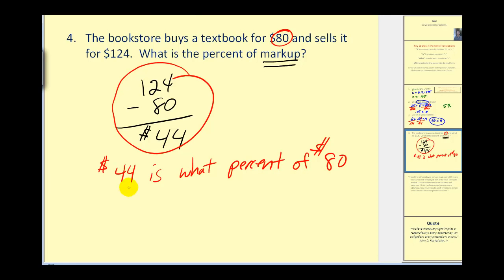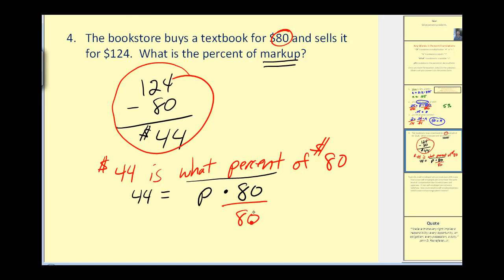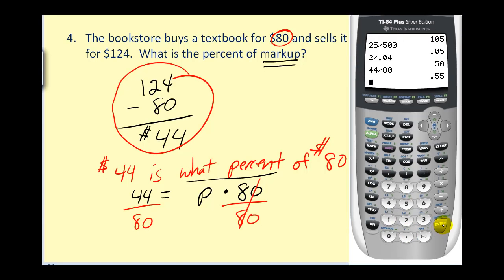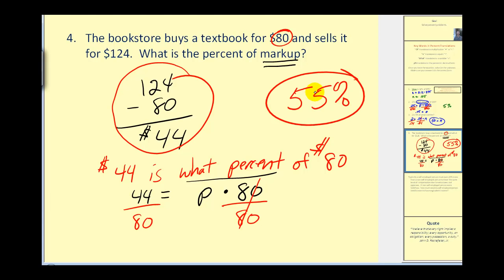Forty-four is, which means equals, what percent — so we use p — of, which means multiplication, eighty. We divide by eighty to solve for p: forty-four divided by eighty, then convert to a percentage by multiplying by one hundred, which gives us fifty-five percent as our markup.